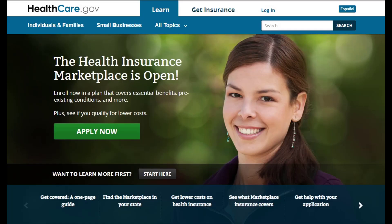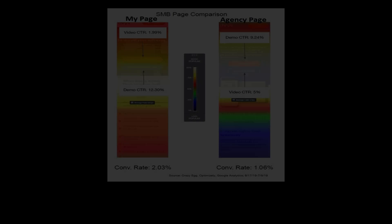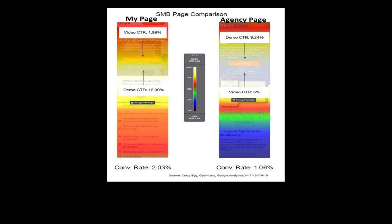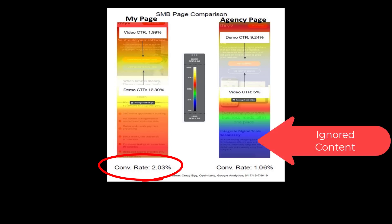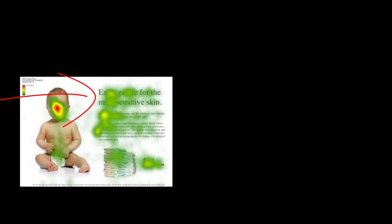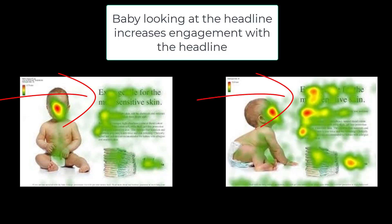Even the images you use will either help you grow your online customer base or repel them. We can easily see this with heat maps and how people look at your marketing material. Common wisdom is to have a smiling woman looking at your potential customer — basically looking back at them on the page — but in testing, this pulls eyes away from the marketing message and lowers the conversion rate. However, having that same model look at your headline or key marketing concepts actually increases conversions.